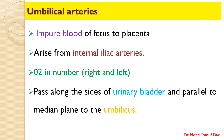Coming first to the umbilical arteries: the umbilical arteries carry impure blood from the fetus to the placenta, or to the mother. These umbilical arteries are two in number — the right and the left — and they arise from the internal iliac arteries. When they arise from the internal iliac artery, they pass along the sides of the urinary bladder, then parallel to the median plane, to reach the umbilicus.